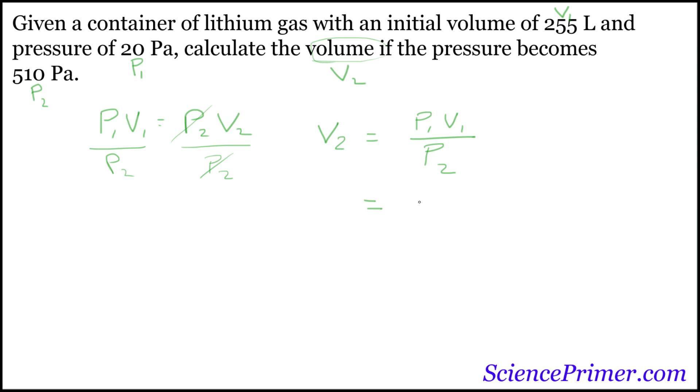p1 is 20 pascals, v1 is 255 liters, so times 255 liters, divide by p2, which is 510 pascals.